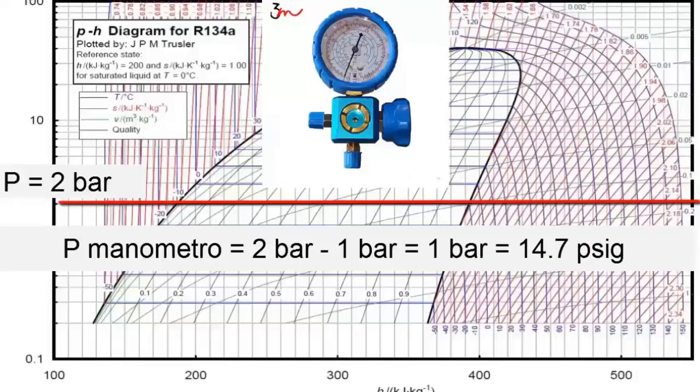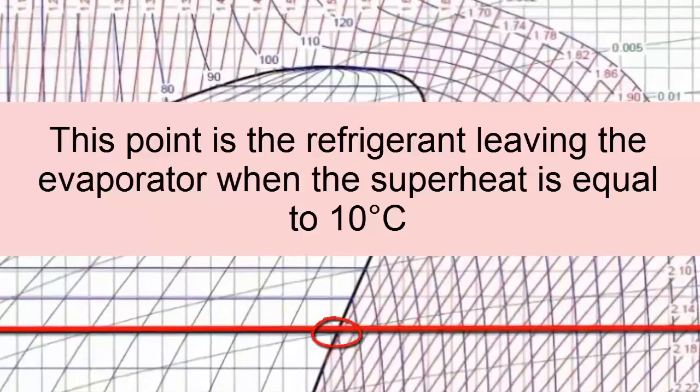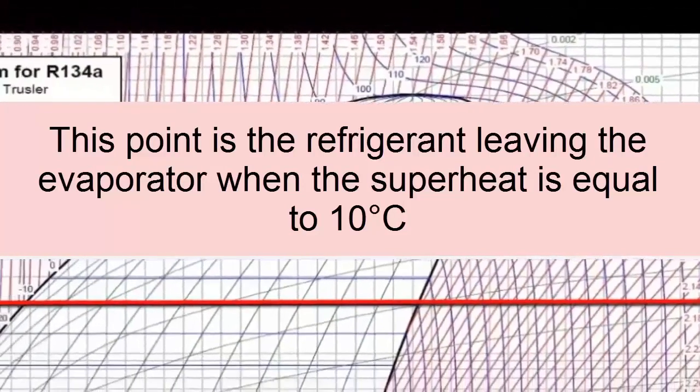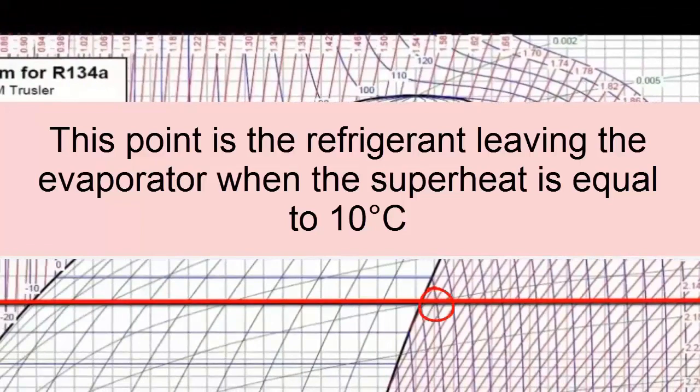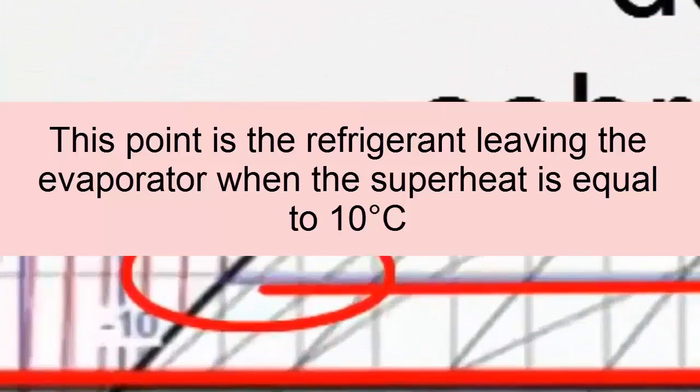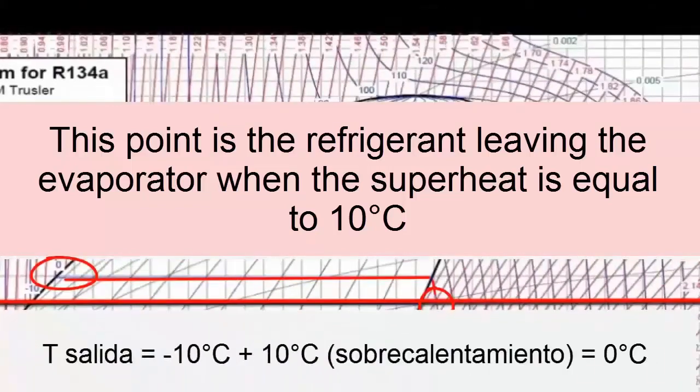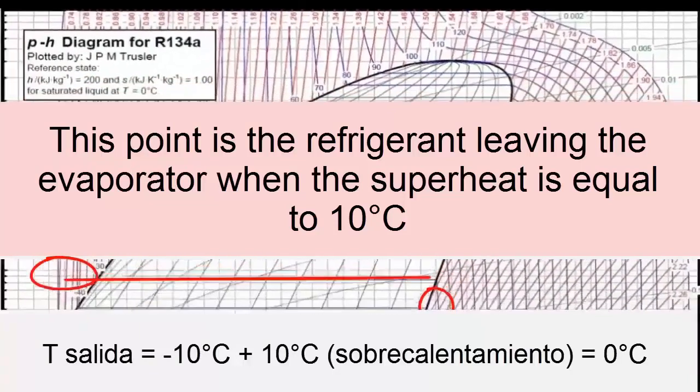The low or blue pressure gauge should read 1 bar or 14.7 psi. This point represents the outlet of the evaporator when there is no overheating of the refrigerant. But when there is an overheat of for example 10 degrees, then the evaporator outlet point moves to the right, because by adding the minus 10 degrees of the evaporator plus the 10 degrees of superheat, a temperature of 0 degrees is reached. Remember that superheating is the increase in temperature of the refrigerant in the evaporator.